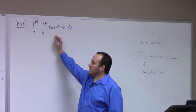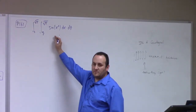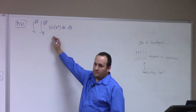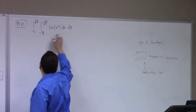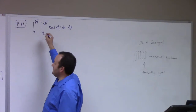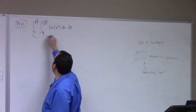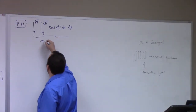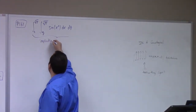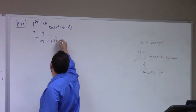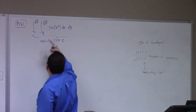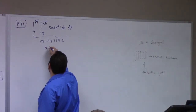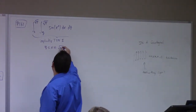People love to put these kinds of problems on tests because they're fun — you just can't do it as it stands. Can you integrate sine(x²)? No. It doesn't have an elementary antiderivative. So what you've got to do is flip the bounds. How is this presented? This is implicitly a type 2 integral.